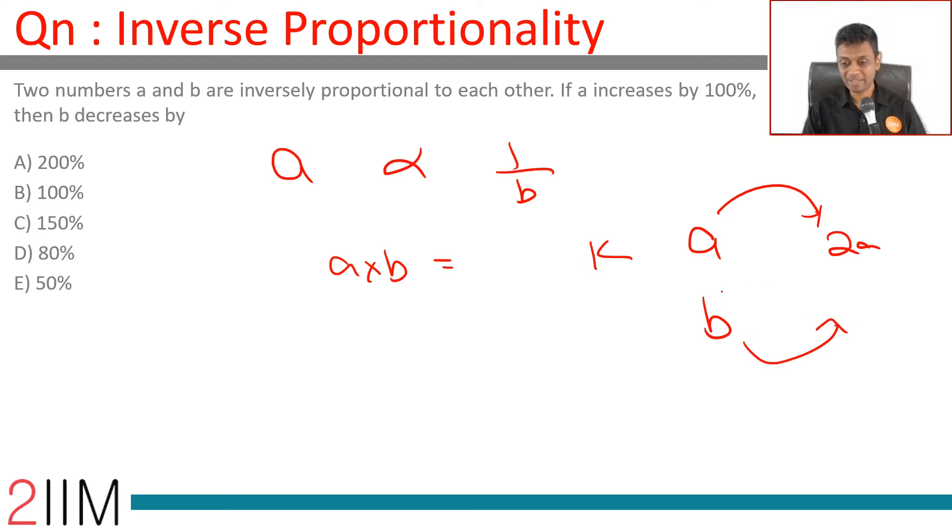What should b become? a doubles, b should be half, which is when a into b will be same as 2a into b by 2. Or b should decrease by 50%, b should become b by 2.